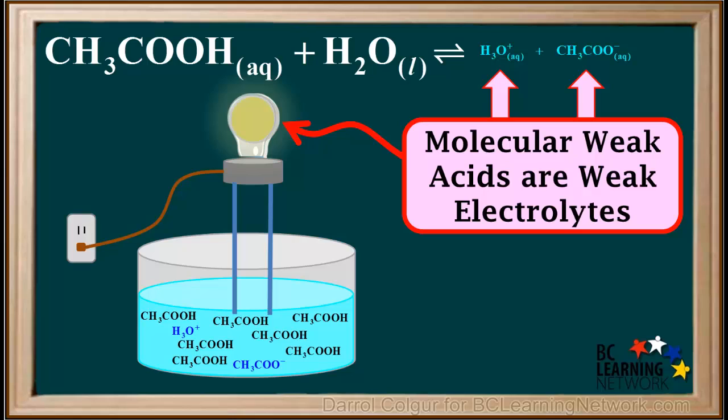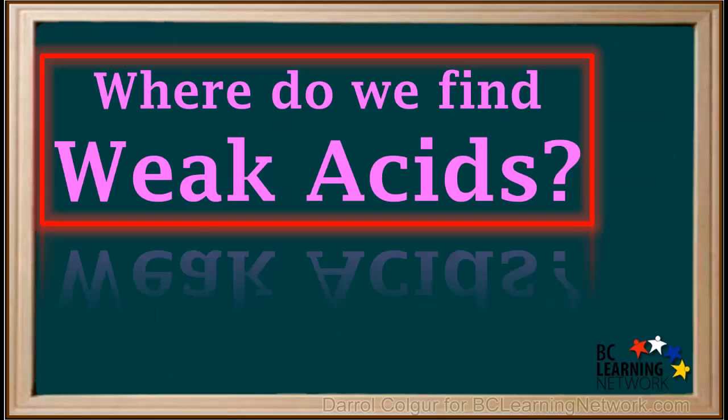So weak acids that start out as neutral molecules, like CH3COOH, are weak electrolytes. So now that we know what weak acids are, where do we find them?